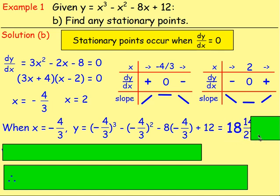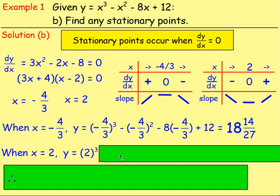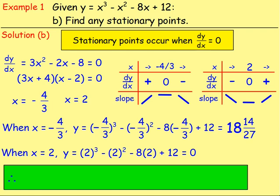So subbing that in, you end up getting 18 and 14 27ths. Lovely number. And do the same thing with 2. If you sub 2 in to the original equation, you could work out y. So do 2 cubed minus 2 squared and so on. If you do that, you end up getting 0.